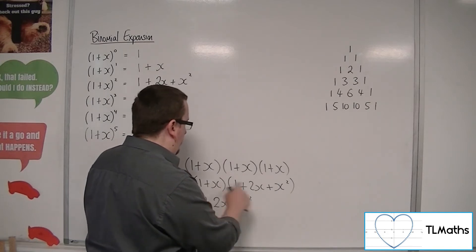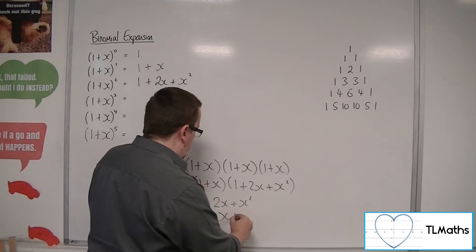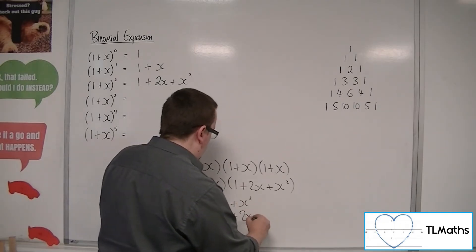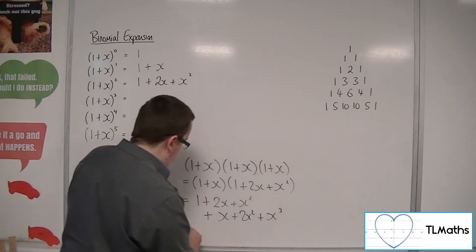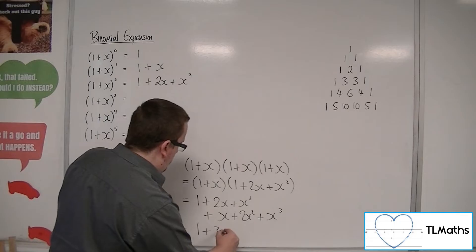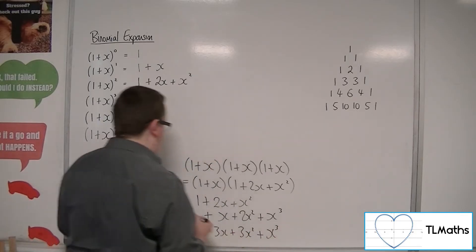So we've got 1 times 1, 1 times 2x, 1 times x^2. x times 1, x times 2x, so 2x^2, and x times x^2 is x^3. So that's going to give us 1+3x+3x^2+x^3.